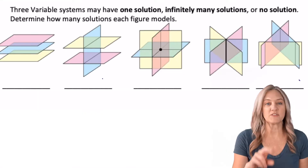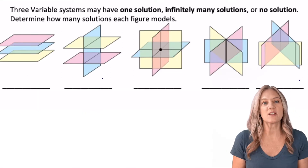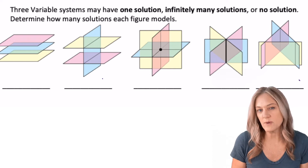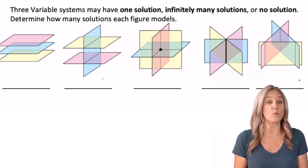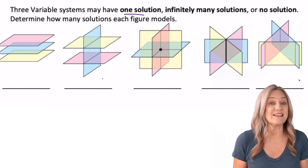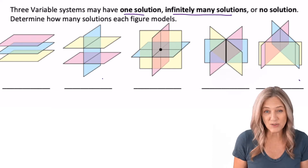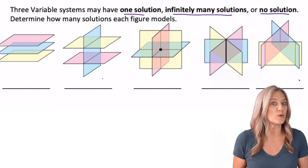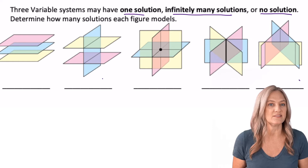Just like systems of two variables, systems of three variables can have one solution, infinitely many solutions, or no solution.